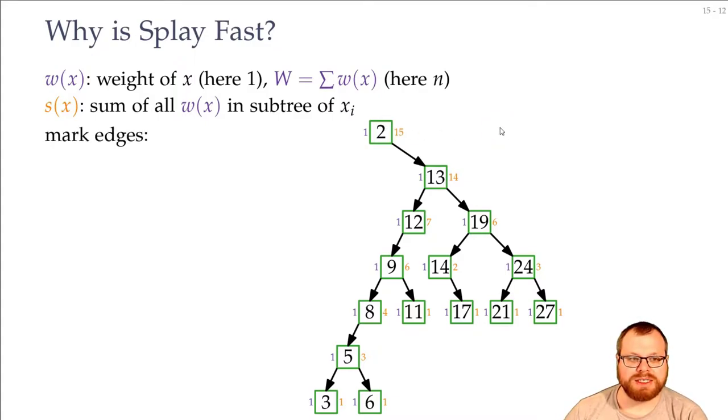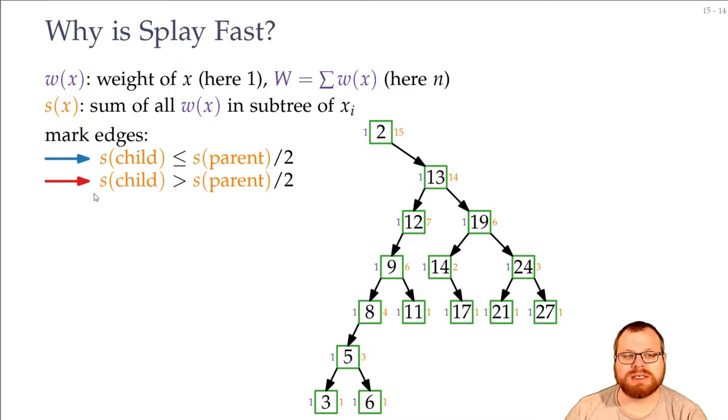So how does this help us? We want to mark the edges, we want to have good edges and bad edges. And the good edges we make blue, the bad edges we make red. We mark an edge as a good or a blue edge if the sum of weights of the child is at most the sum of weights of the parent divided by 2. So that means that we lose at least half of the nodes of the subtree if we follow a blue edge. And otherwise we mark it as a red edge.